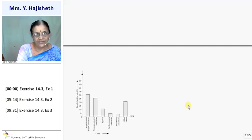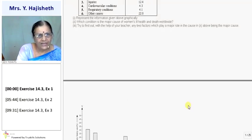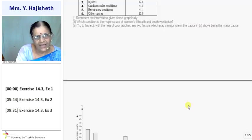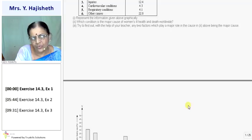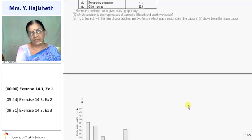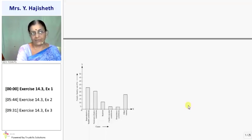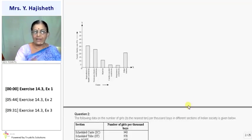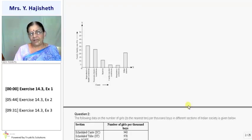Third question is, try to find out with the help of your teacher, any two factors which play a major role in the cause of reproductive system. Toh teacher ki help leke. Kyun huwa reproduction mein? Delivery mein care nahin li jaati hai, achcha food nahin diya jata hai auraton ko? That is the two reason. Achcha diet nahin diya jata hai, right?